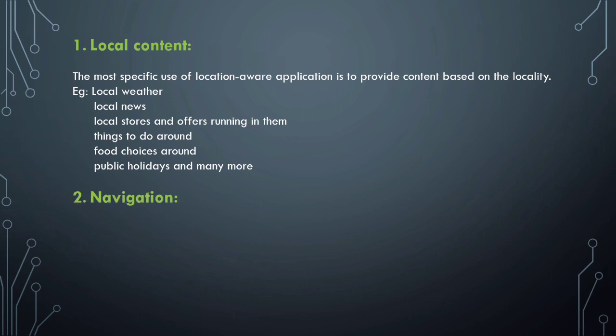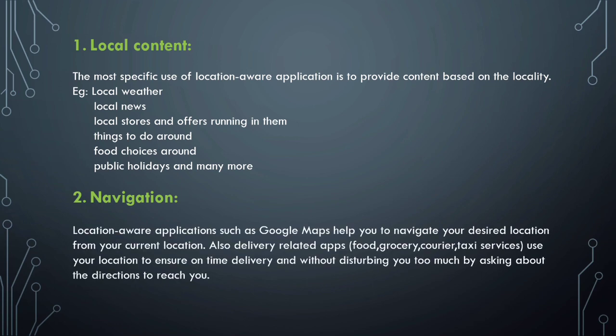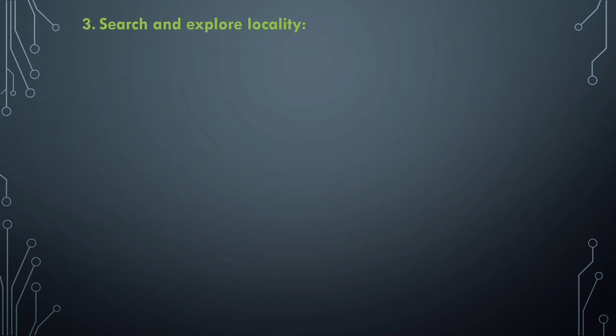Next is navigation. Location-aware applications such as Google Maps help you navigate to your desired location from your current location. Delivery-related apps like Swiggy, Zomato, and Uber use your location to reach you for pick-up and drop-off. Courier services like Delhivery and e-kart also use your location to ensure timely delivery of items without needing to ask you for directions.